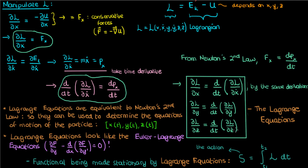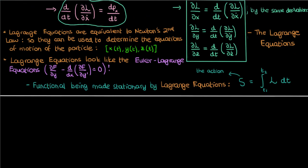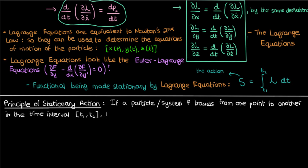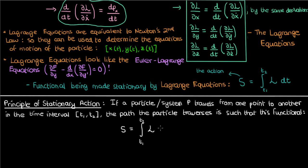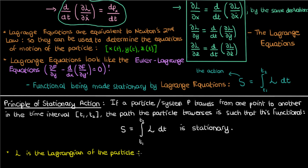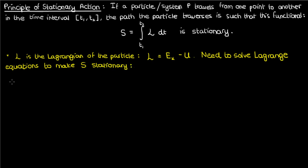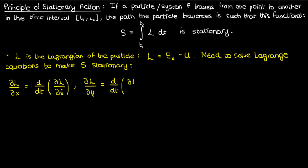Now that we've introduced the action quantity, we are in a position to talk about the principle of stationary action, also known as Hamilton's principle. It says that if I have a particle P traveling from one point to another in a time interval from t1 to t2, the path the particle traverses is such that the action integral is stationary — the particle traverses a path such that the integral from t1 to t2 of the Lagrangian, the kinetic minus the potential energy, is stationary. To make this action integral stationary, we solve the Lagrange equations, which are found by applying the Euler-Lagrange procedure to this action integral.